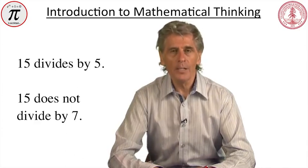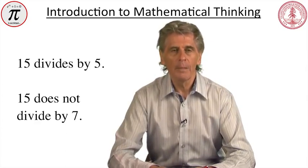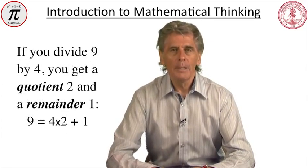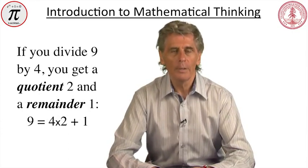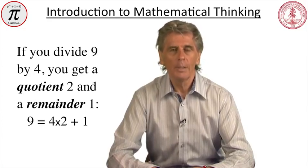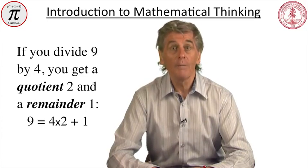If you restrict arithmetic to the integers, division actually leads to two numbers, a quotient and a remainder. For example, if you divide 9 by 4, you get a quotient of 2 and a remainder of 1. 9 equals 4 times 2 plus 1. This is a special case of our first formal theorem concerning integers, the division theorem.